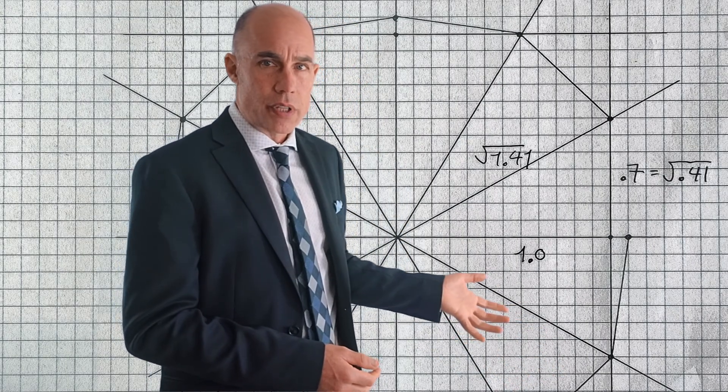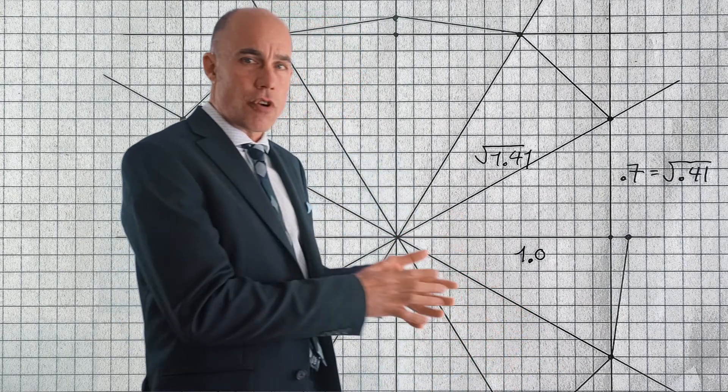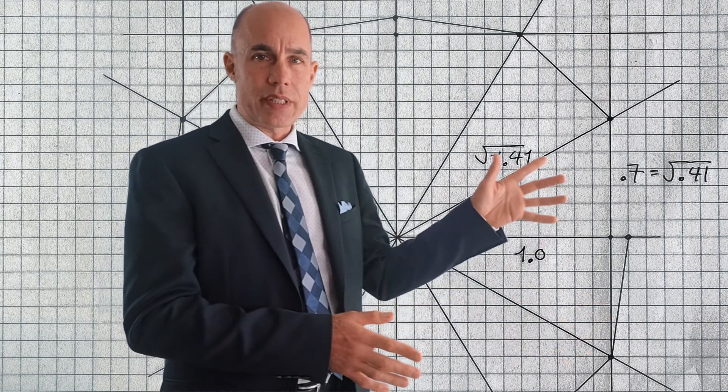So here is what that looks like and what we're going to do is look at this triangle that's formed here when we go over 1 and then up 0.7.